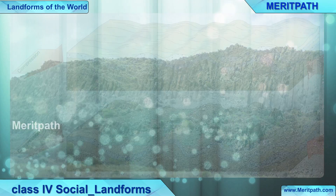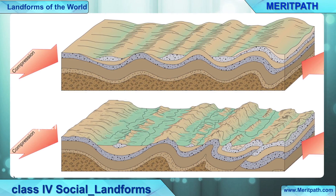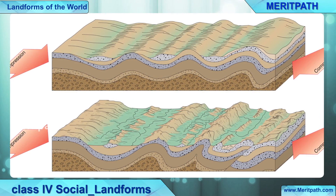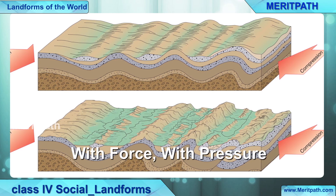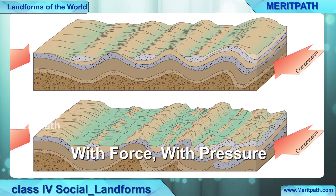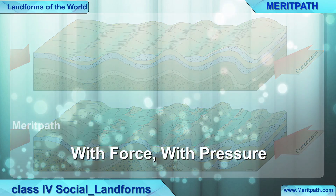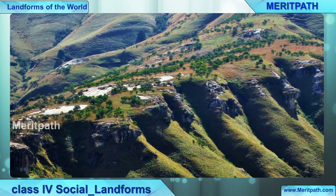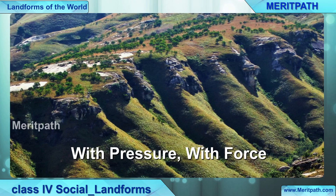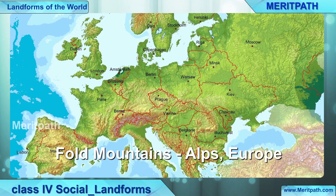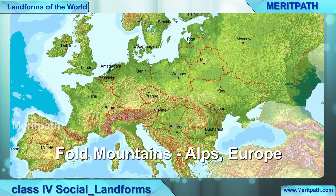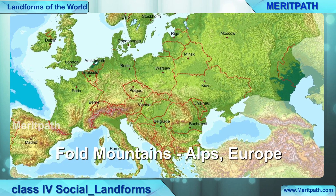How are fold mountains formed? These are formed when two large land masses push against each other with a force and pressure. You can see in the diagram how, when two large land masses push against each other, they form fold mountains. The Alps in Europe is an example of fold mountains.